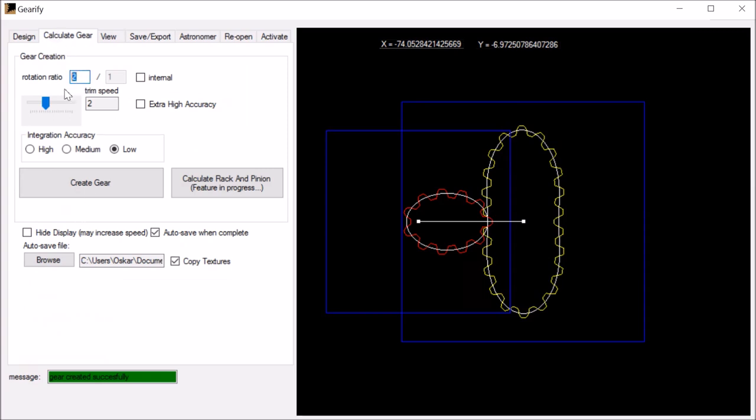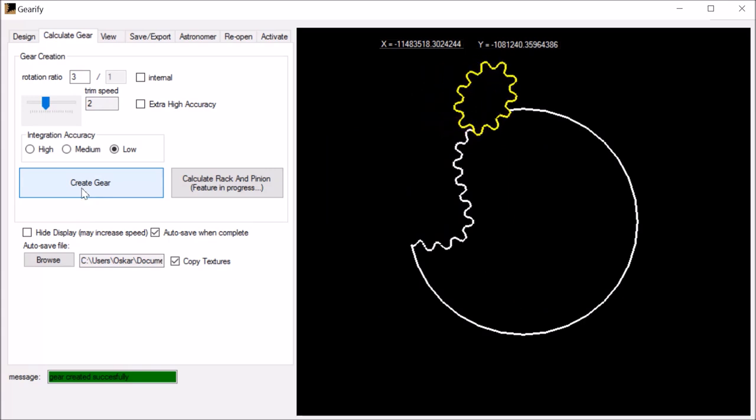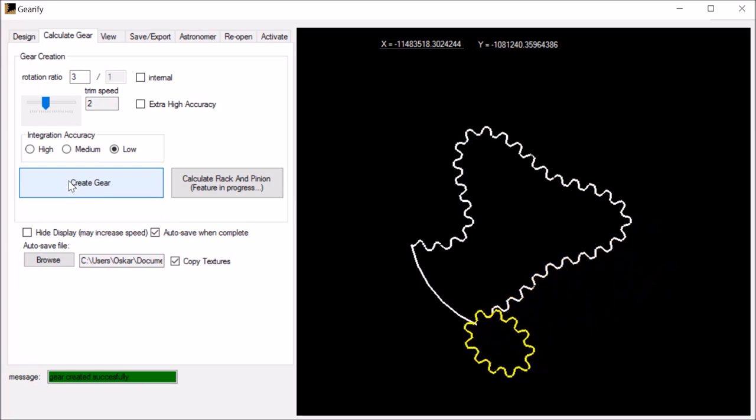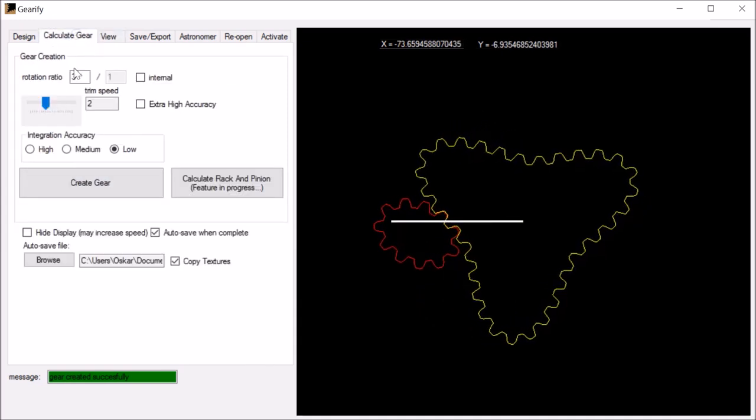But instead of two to one, we can have three to one. And there we are. It is in a matter of seconds that we have three to one. And similarly we do four to one, five to one, six to one and seven to one. So let me show you—immediately go to seven to one.